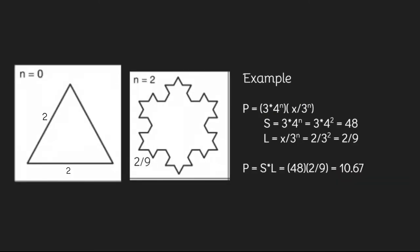Here's an example demonstrating the formula. Here, we find the perimeter of the second iteration if each side of the zeroth iteration is 2. It has 48 sides, and the length of each side is 2 ninths. The result is 10.67.